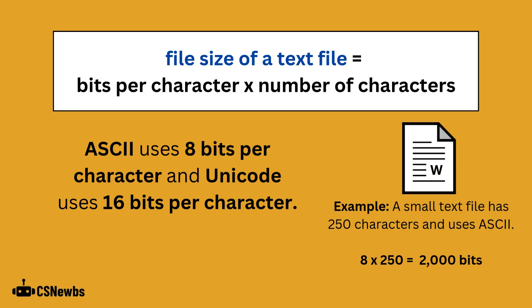As an example, let's say a small text file has 250 characters and uses the ASCII character set. You would do 8 multiplied by 250 to give you 2000 bits.